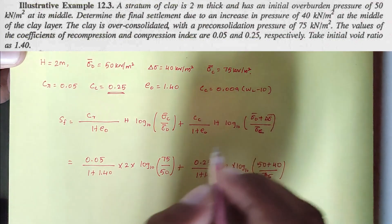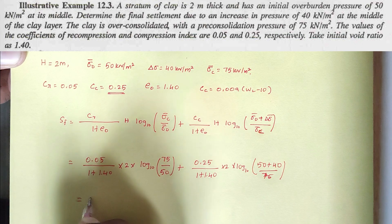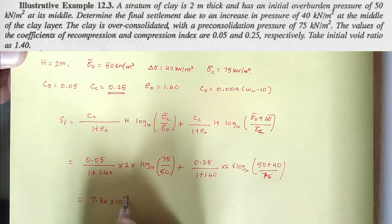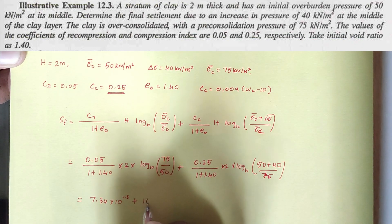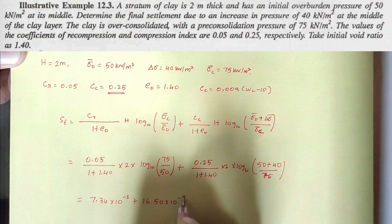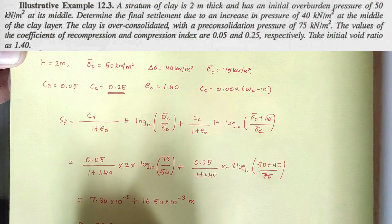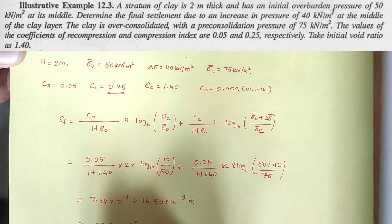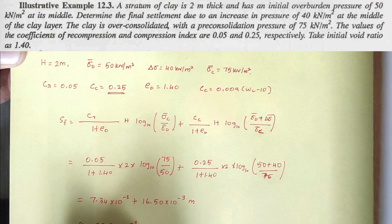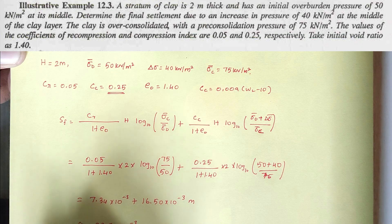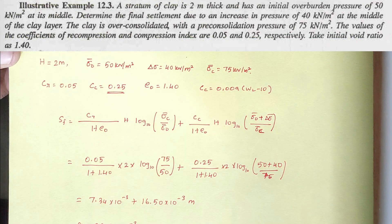Solving, we get 7.34 × 10⁻³ m plus 16.50 × 10⁻³ m. The total final settlement Sf equals 23.84 × 10⁻³ m, which converts to 23.84 mm. This is the final settlement. Thank you, and we will see the next video.